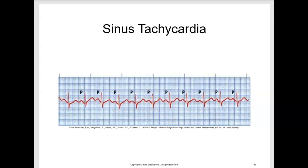The desired outcome is to decrease the heart rate to a normal level by treating the underlying cause. With sinus tachycardia, the rhythm is initiating in the SA node, so it's not the rhythm per se that's the problem — it's just the heart rate. Remind the patient to remain on bed rest if the tachycardia causes hypotension or weakness. Teach the patient to avoid substances that increase cardiac rates such as caffeine, alcohol, or nicotine.